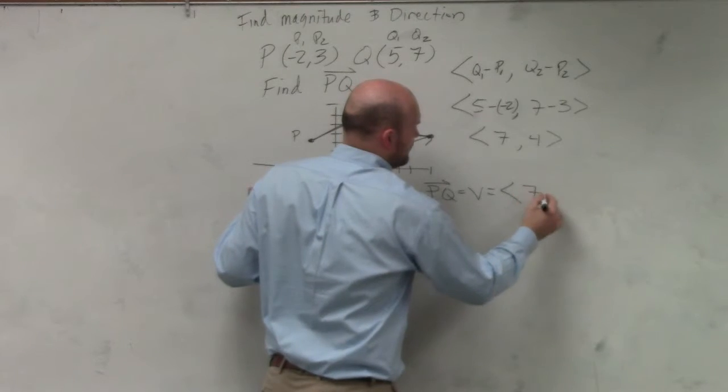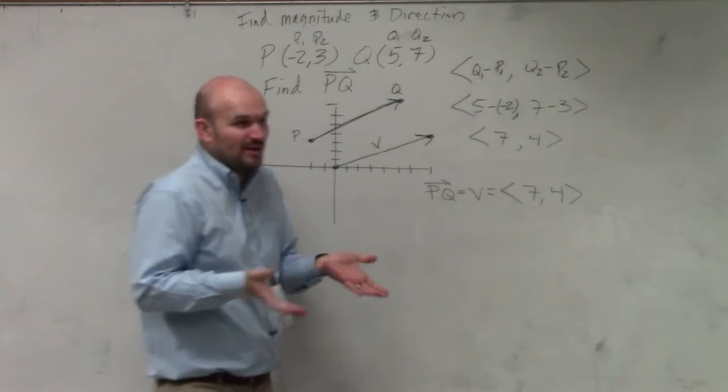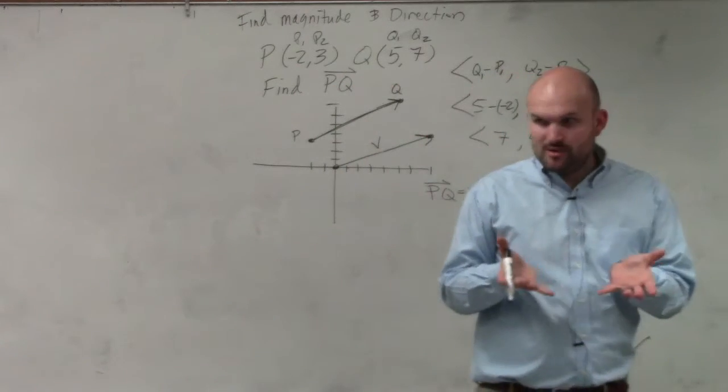So we can say that's vector V. And we just write component form, like a coordinate point. But it's actually not a coordinate point at all. It's not a coordinate point at all.